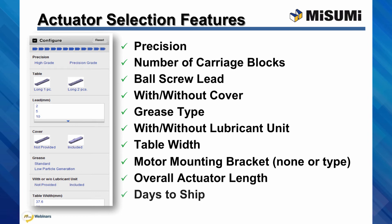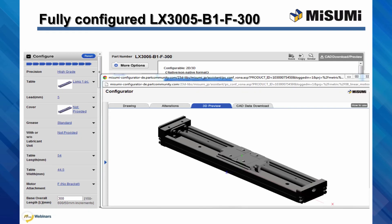This process can then be repeated for each subsequent axis in your system. For example, the base actuator in a multi-axis system is typically larger than the first actuator, so here we've configured an LX30 for the base. By configuring the part online using our sizing and selection process, we end up with a final part number of LX3005-B1-F-300, which we can download as a 3D CAD model to insert into our design.